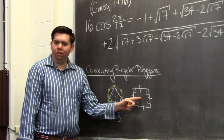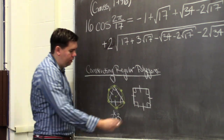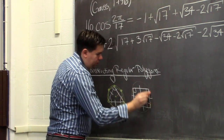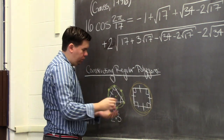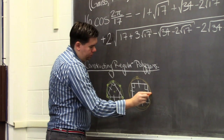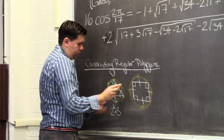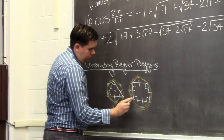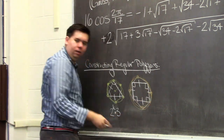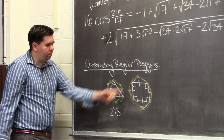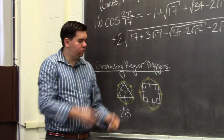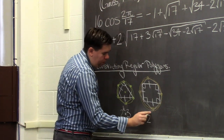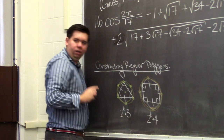Similarly, once you have the square, you can construct any regular octagon by inscribing it in a circle and bisecting each side to find the corresponding points on the circle. Or if you want the regular 16-gon, you bisect those sides, and so on for the 32-gon. So you can construct any polygon of the form 2^k × 4.